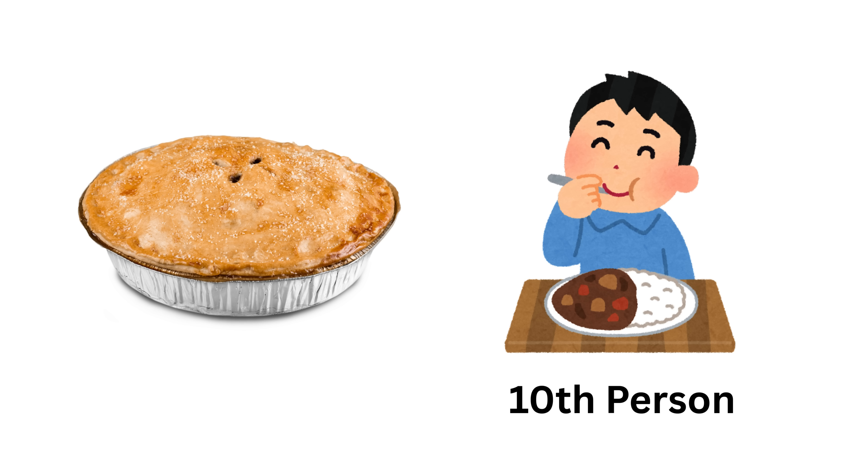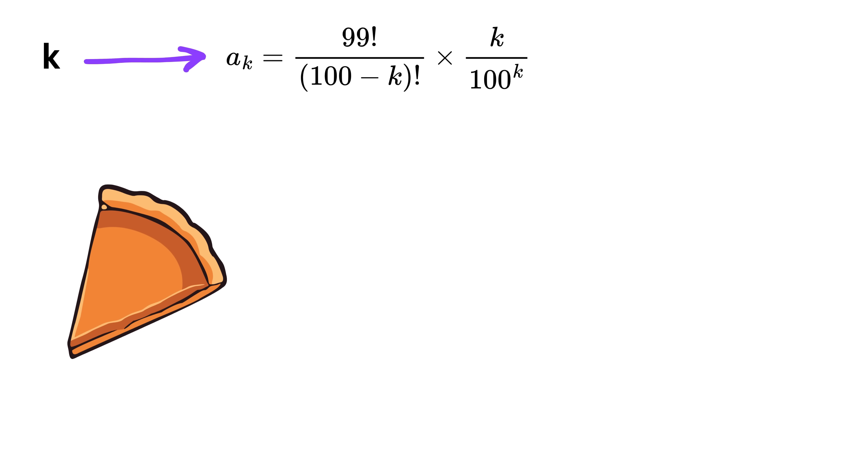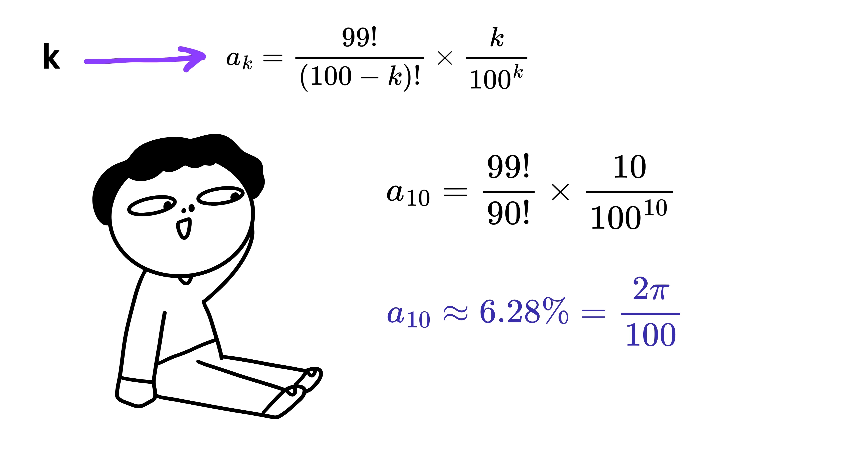Therefore, the person who gets the largest slice is person number 10, and that's our answer. Now just out of curiosity, we can also compute the exact share of the pie for person 10. After simplifying, the final value turns out to be around 6.28% of the whole pie. As a fun coincidence, this number is very close to the quantity 2 times π divided by 100. So this means that we started with 1 pie and wound up with 2π.